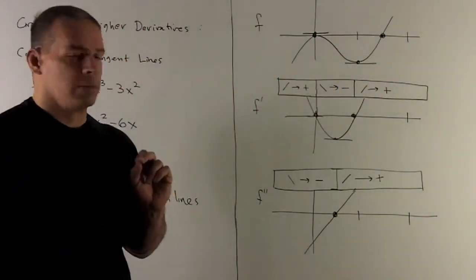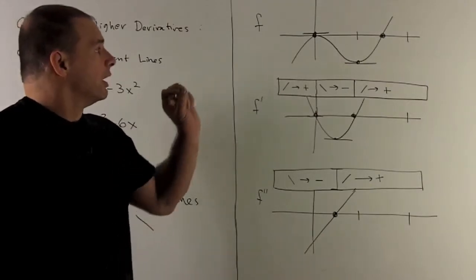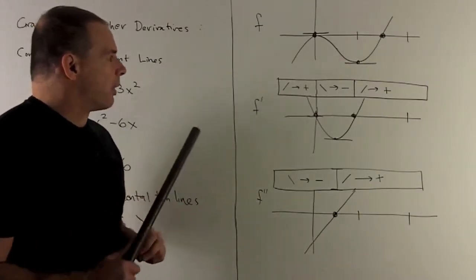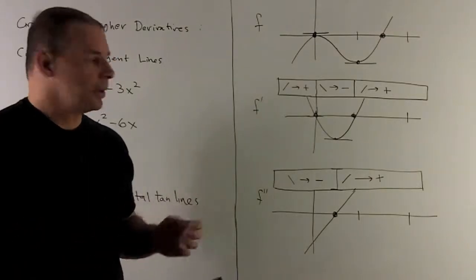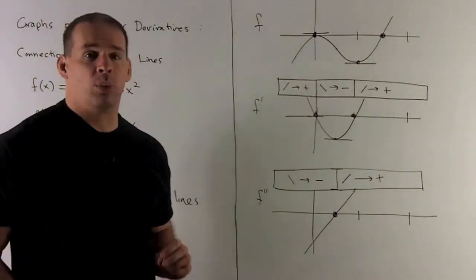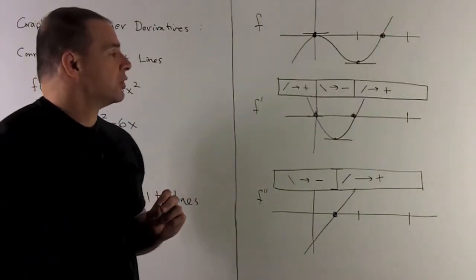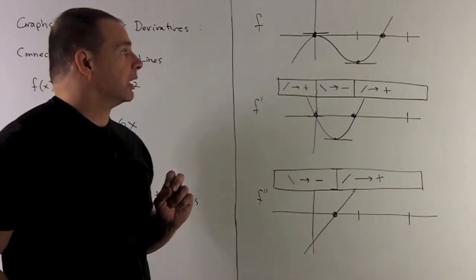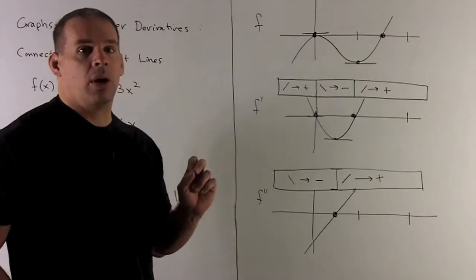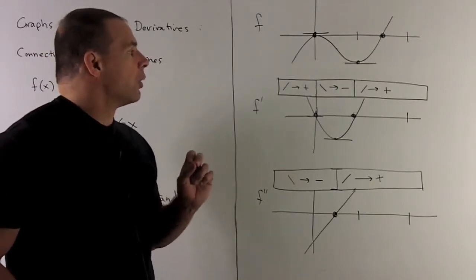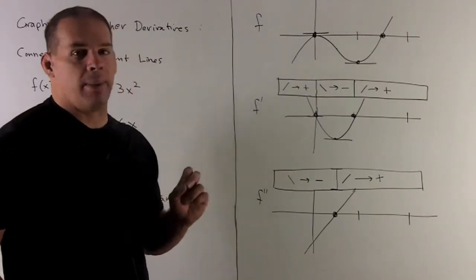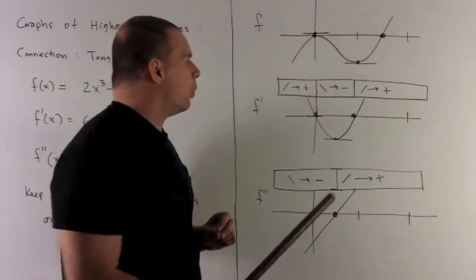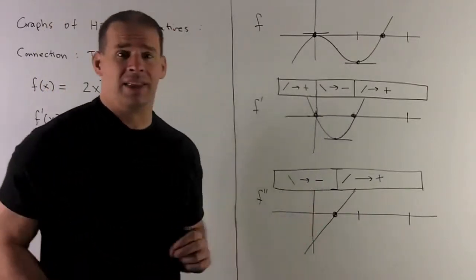So here are my three graphs. Here we have f. Here I have f prime, the parabola facing up. And then I have f double prime, which is a straight line. So now, if I take a look at f, where are the horizontal tangent lines going to be? Well, they're going to be at 0 and 1. So what's going to happen is, when I go to f prime and I graph it, at 0 and 1, that's where I'm going to cross the x-axis.